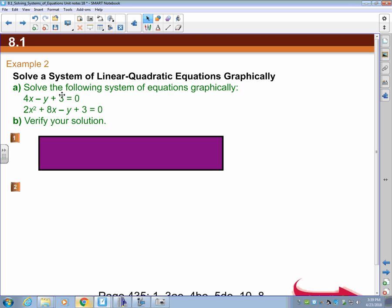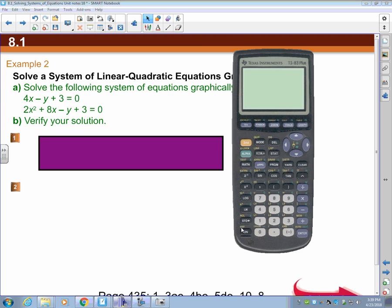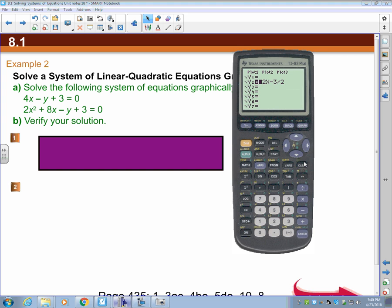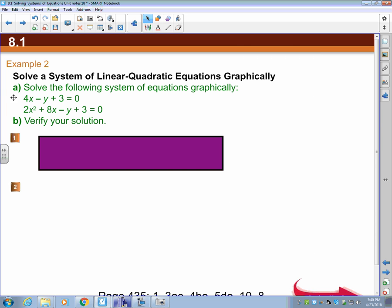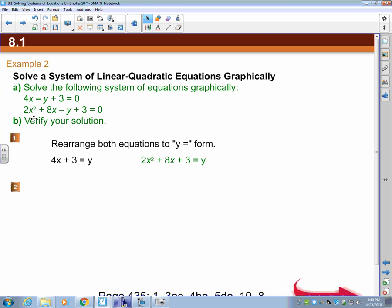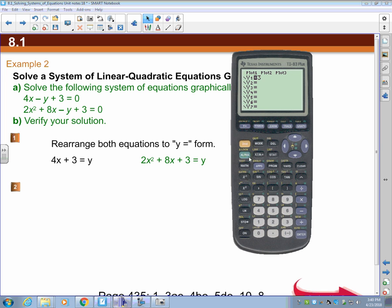Now, when we solve this system graphically, this is the only other example there is. We have 4x - y + 3 and 2x² + 8x - y + 3 = 0. Both of them equal 0. We can't have them equal 0 because they won't go into my calculator at 0. So I need to rearrange both of these. We need to get y by itself in both of them. Pretty easy to rearrange for y in both of these. Just add y to both of these equations. You end up with these two equations. Now I have y = 4x + 3 and y = 2x² + 8x + 3. Now, this is a linear quadratic system and it can have either 1, 2, or no solutions.